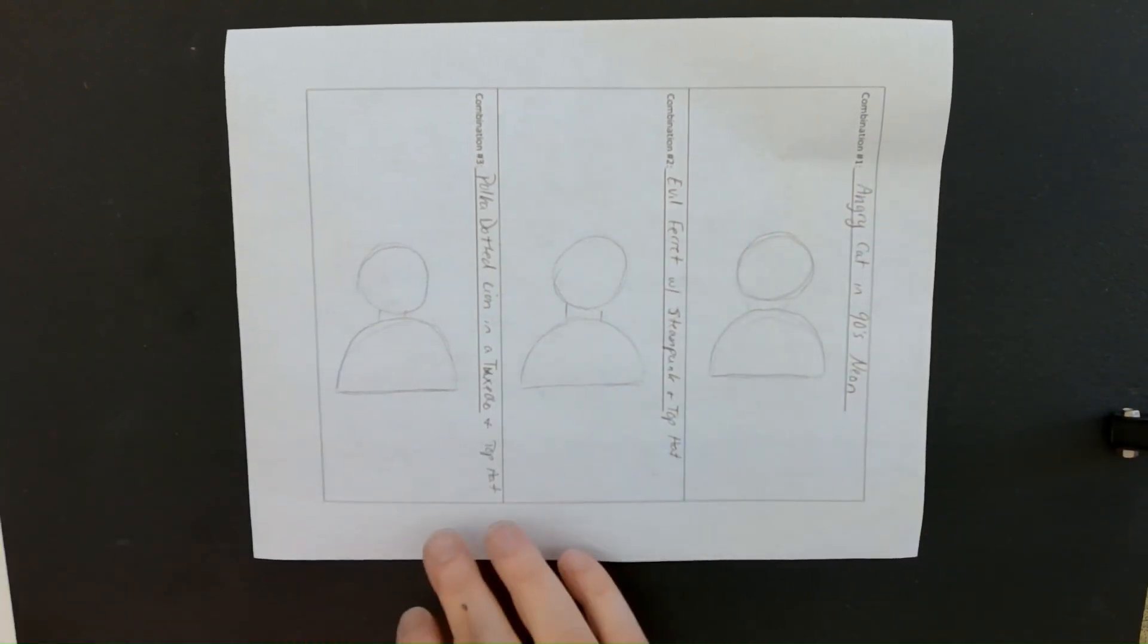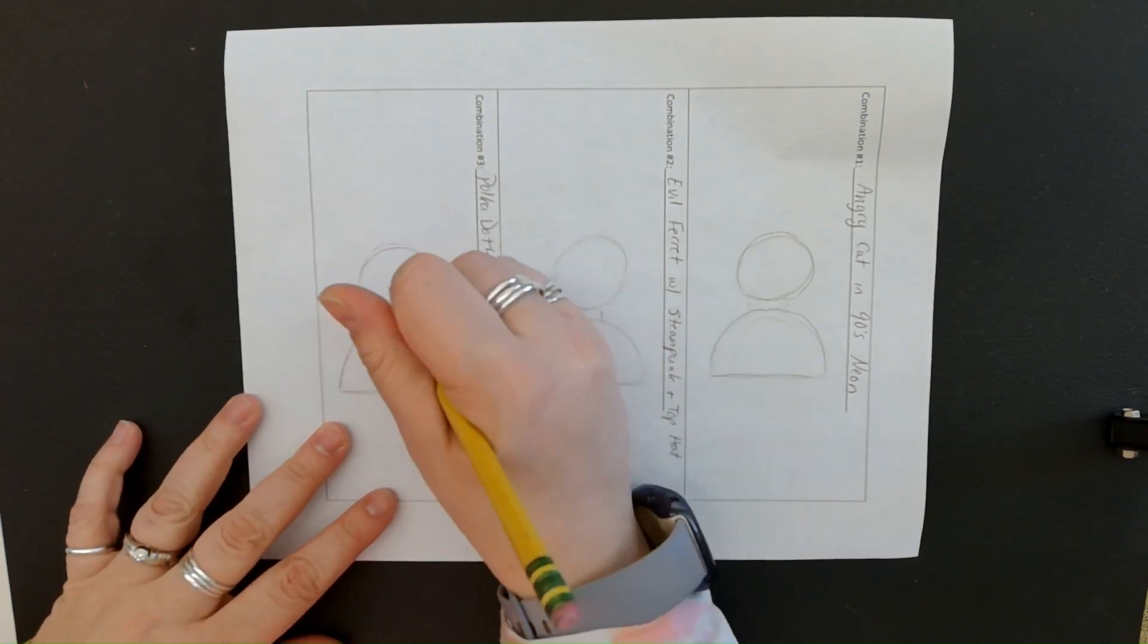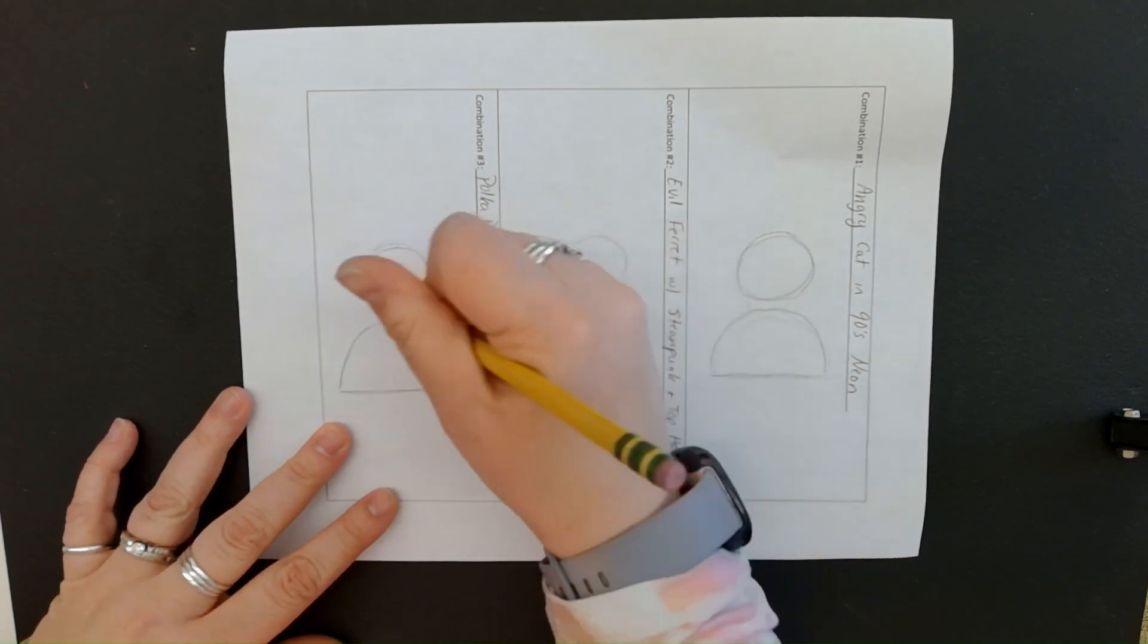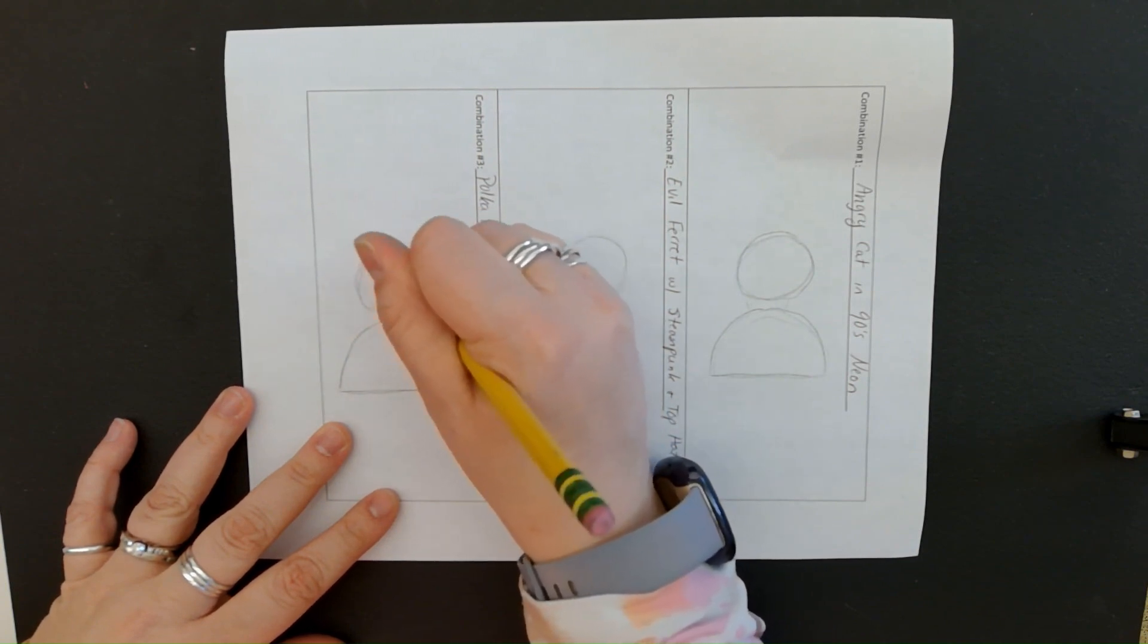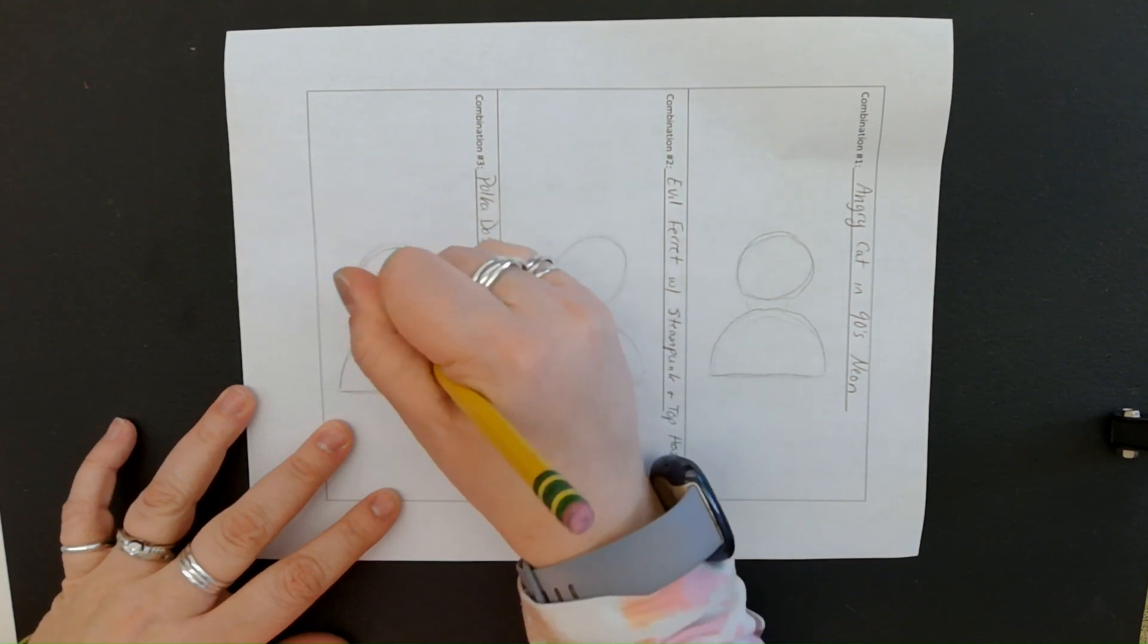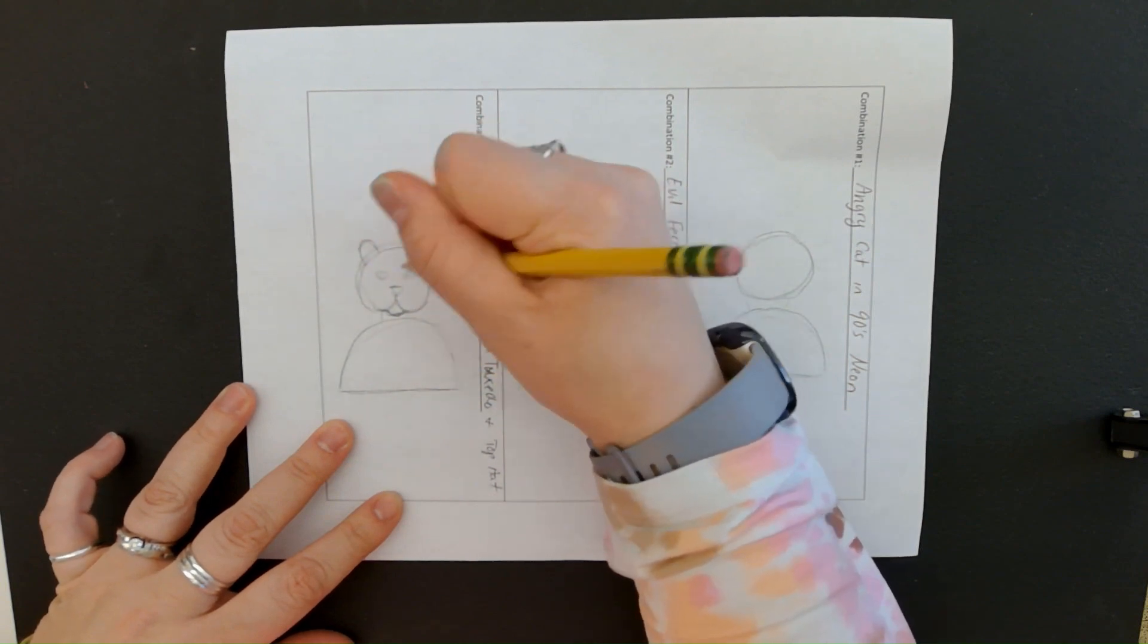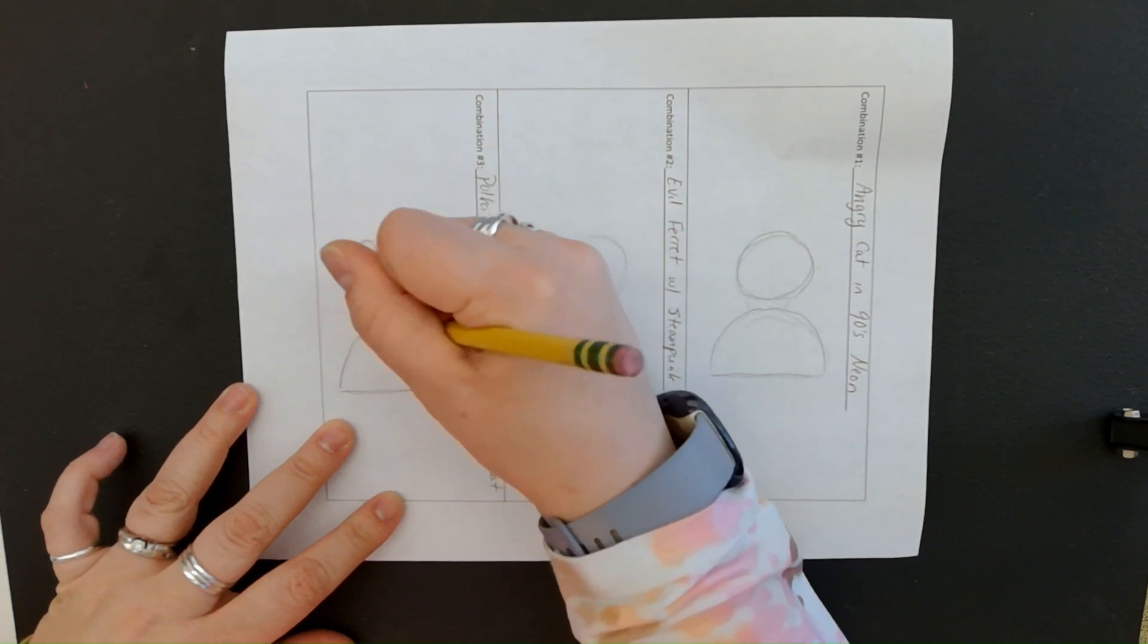So I'm looking here at my polka dotted lion in a tuxedo and a top hat. Alright. So if I'm looking at a lion shape, I know that I'm going to have kind of a cat nose. His face kind of comes a little side like that. His face is a little more round. His eyes are here. He has a chin that kind of goes like that. He's got more rounded ears. Lots of hair.